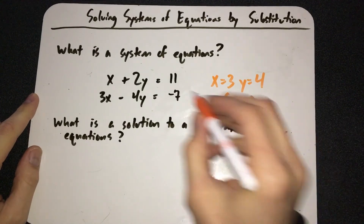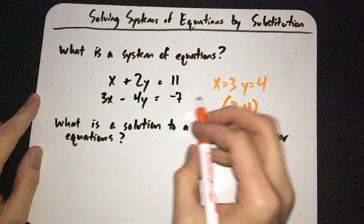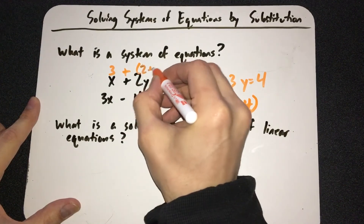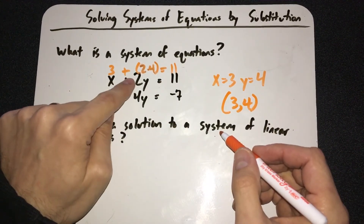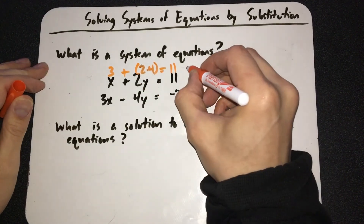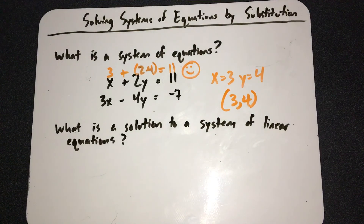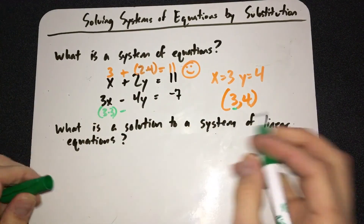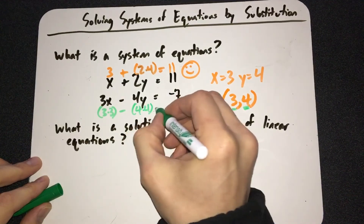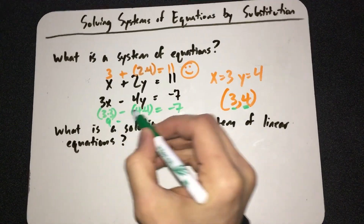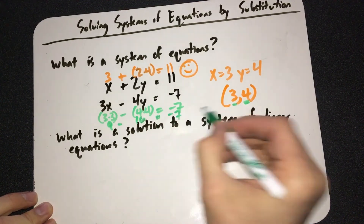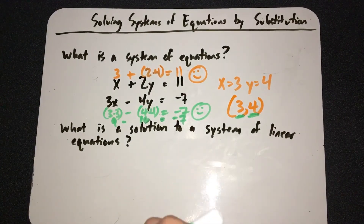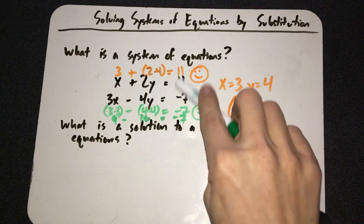If you put 3 in the spot of x and 4 in the spot of y, the top equation equals 11: 3 plus 2 times 4 is 8, and 8 plus 3 is 11. Then for the bottom equation, 3 times 3 minus 4 times 4: that's 9 minus 16, which is negative 7. So it's a magic combination of x and y coordinates that, when plugged into the variable spots, makes both equations true.